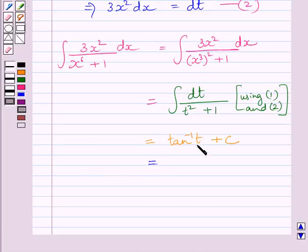Now, t = x³. Substituting x³ for t, we get tan⁻¹(x³) + C.